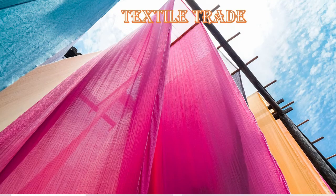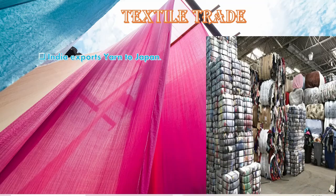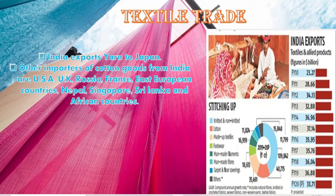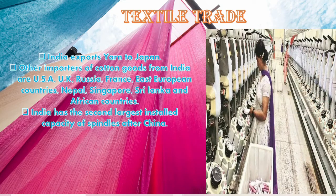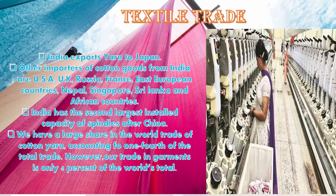India exports yarn to Japan; other importers of cotton goods from India include the USA, UK, Russia, France, East European countries, Nepal, Singapore, Sri Lanka, and African countries. India has the second largest installed capacity of spindles after China. India has a large share in the world trade of cotton yarn, which accounts for one-fourth of total trade, but trade in garments is quite low at only four percent of world trade.